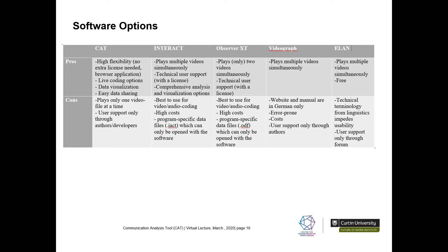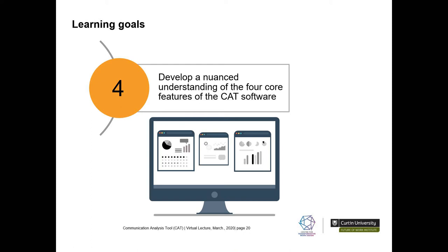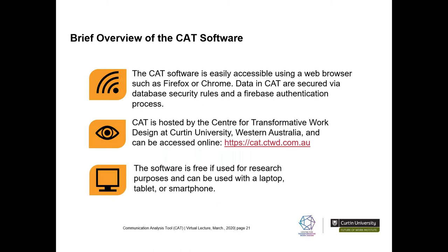I'm going to talk about the CAT software, starting with its four core features and then providing a guided tour. Before I do that, I just want to cover the logistics: the CAT is easily accessible using web browsers such as Firefox and Chrome — we do not recommend Internet Explorer. It is hosted by the Centre for Transformative Work Design at Curtin University, is free to use for research purposes, and can be used with a laptop, tablet, or smartphone.